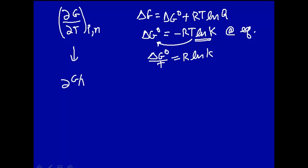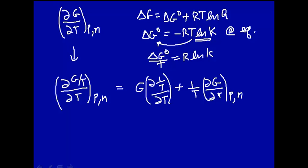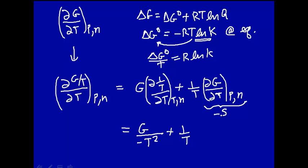Let's look at how G/T varies with temperature at constant pressure and number of moles. G will depend on temperature, and temperature depends on temperature, so we use the product rule of calculus: G times the derivative of 1/T with respect to T, plus 1/T times how G varies with temperature at constant pressure and number of moles. This gives us G times (-1/T²) plus (1/T) times (dG/dT). Remember that dG/dT at constant pressure and n equals -S, from last lecture.